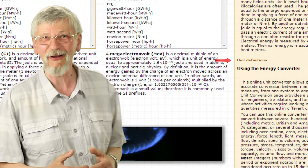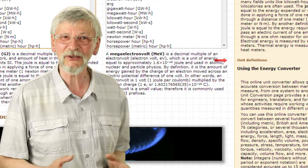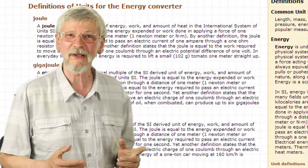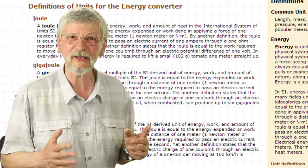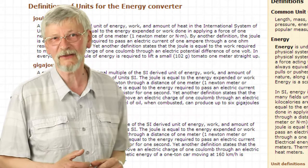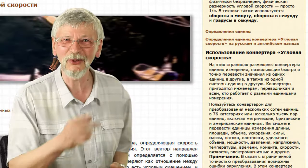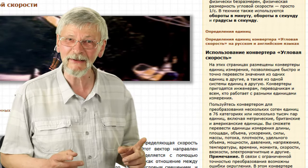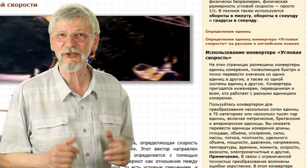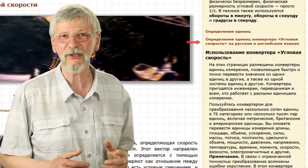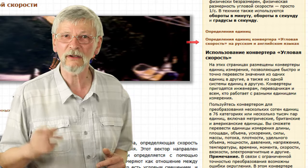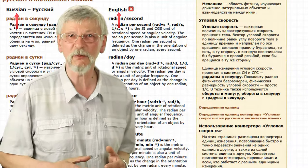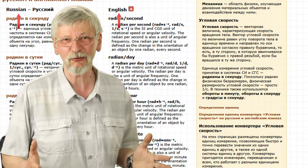If you click the unit definitions on the right side of the page, you will be taken to the page that lists all of the units and their definitions for the converter that you selected. If you open any converter page in a language other than English — for example, the converter page in Russian — and click the unit definitions in Russian and English, or click the British flag on the right, you can open the page with a list of unit descriptions in English and in Russian.